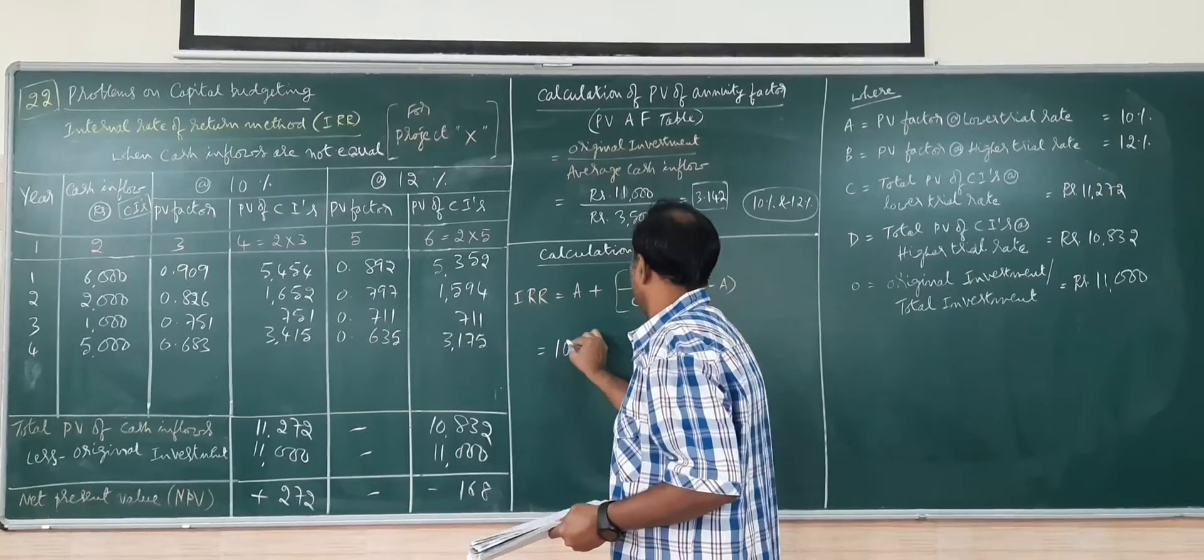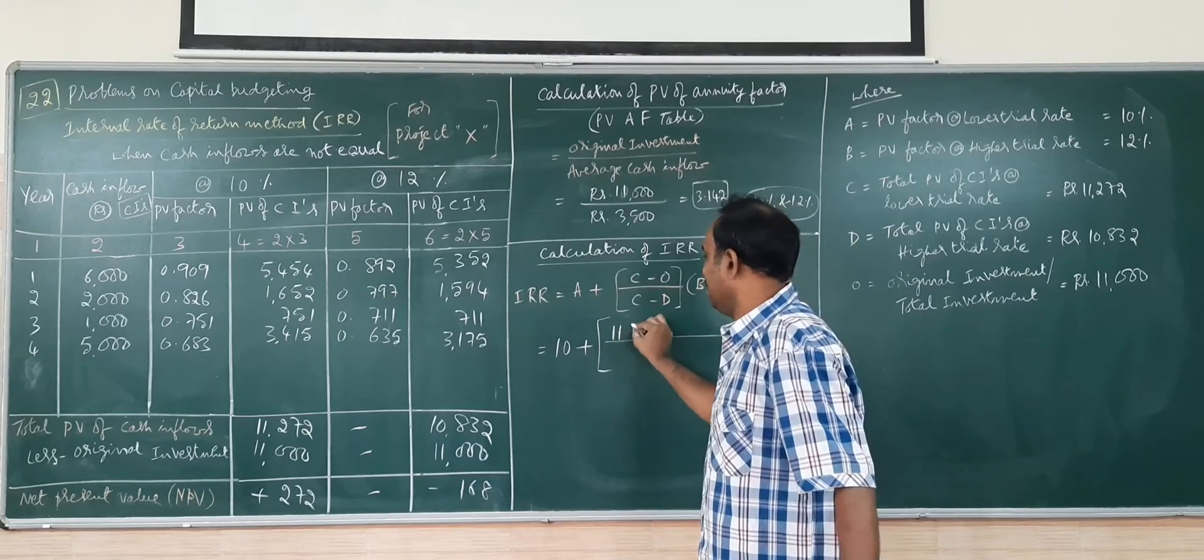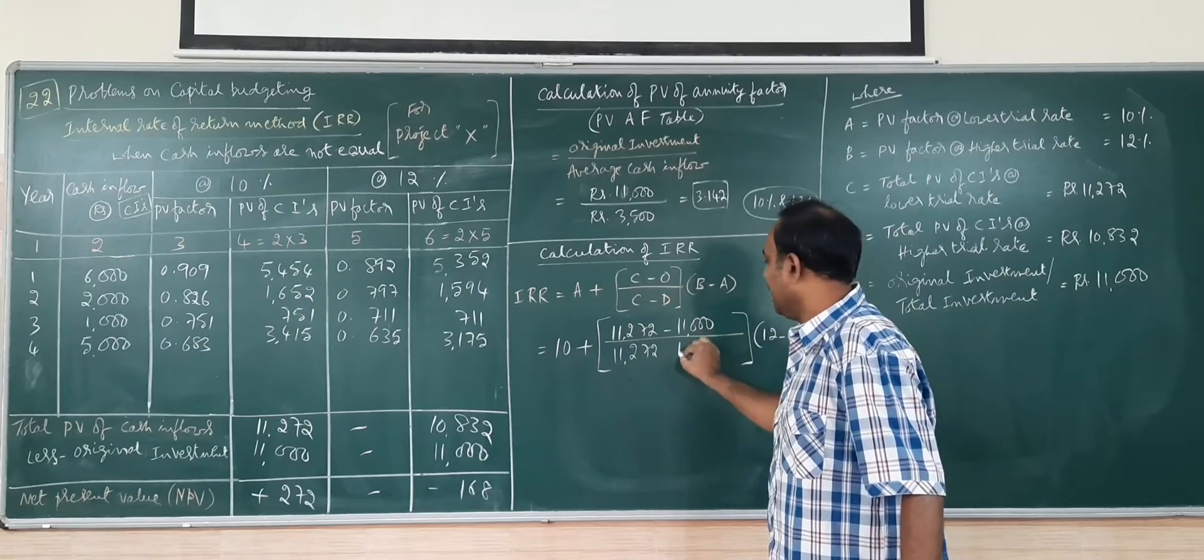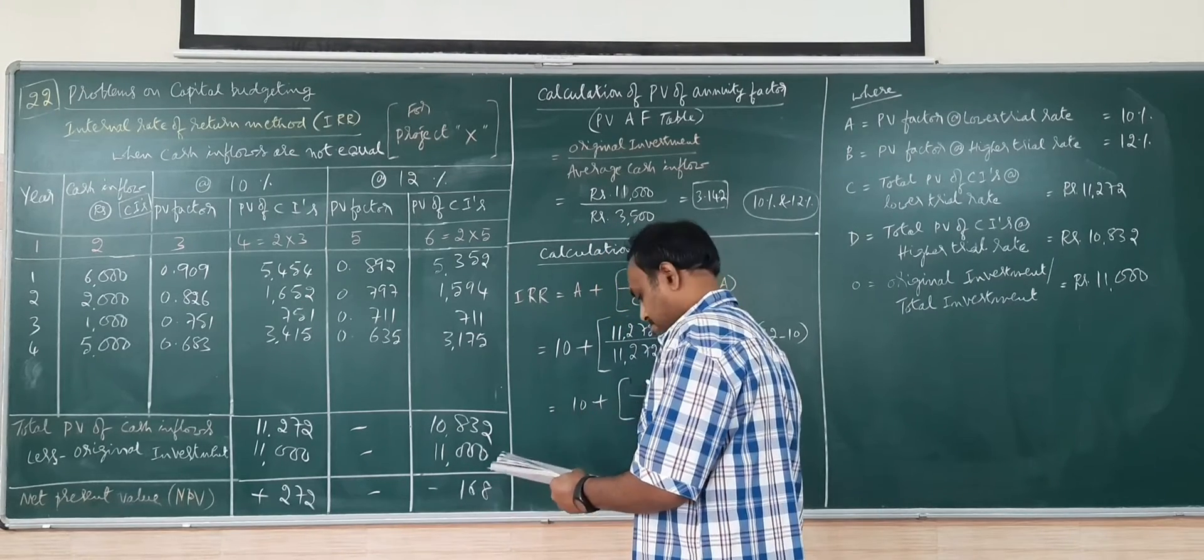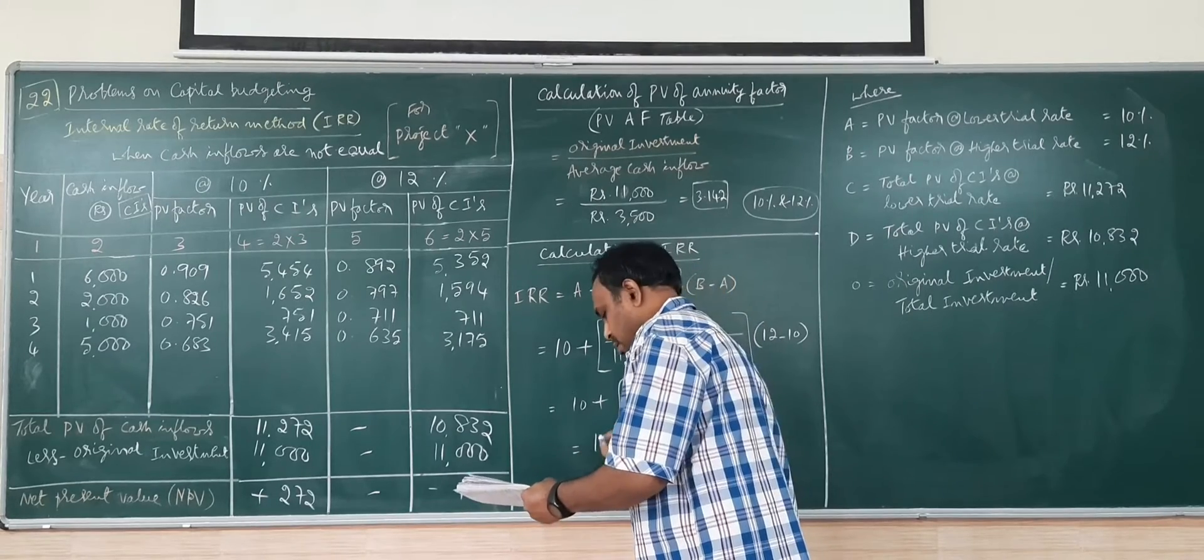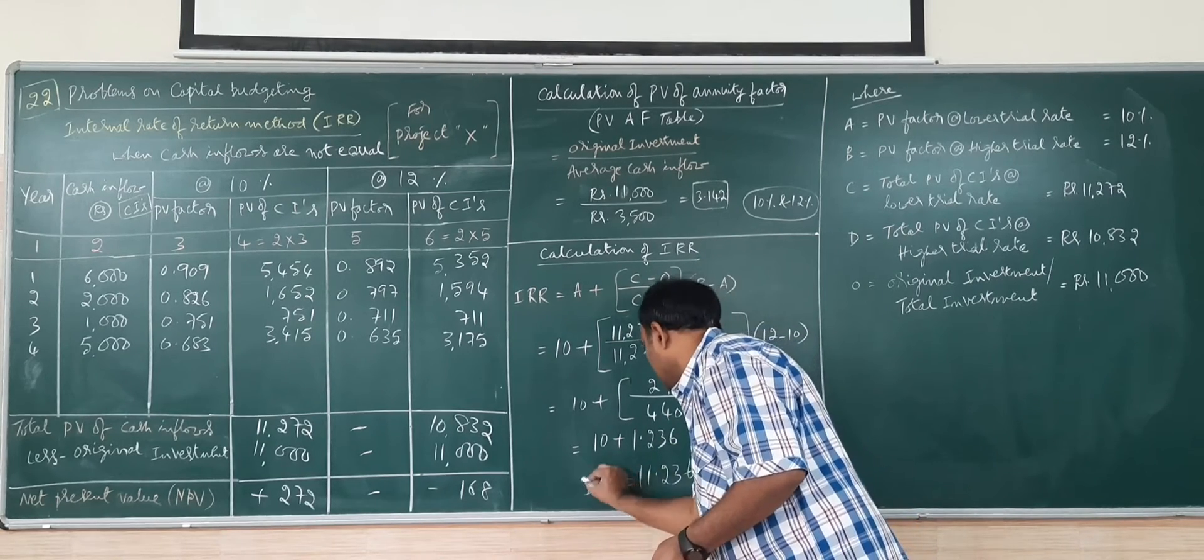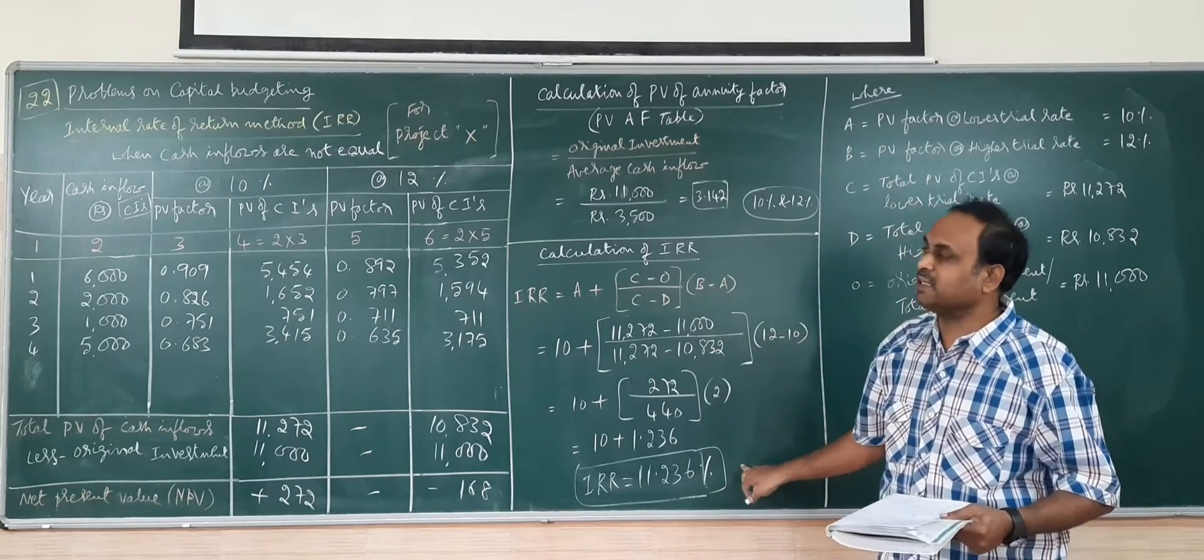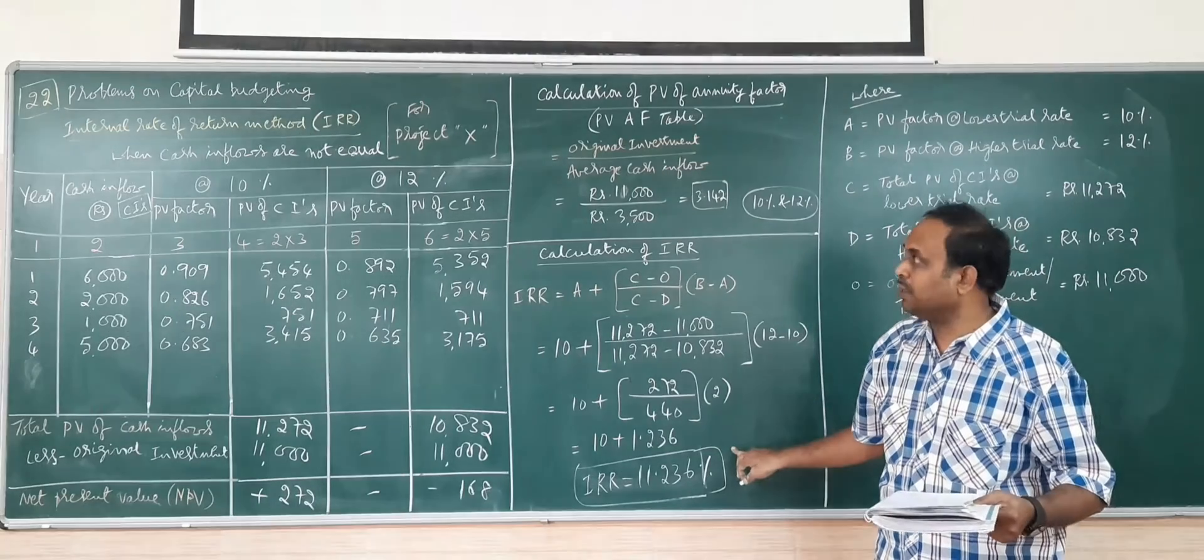Let me substitute the values for IRR calculation. A is 10 percent, C is 11,272, then O is 11,000, D is 10,832. Then go for simplification. I get here 10 plus 1.236. 11.236 is the IRR for project X. We have to find similarly for Y also, and then we have to find whichever is higher. That is the good return for the organization.